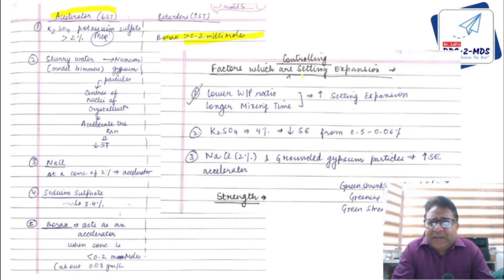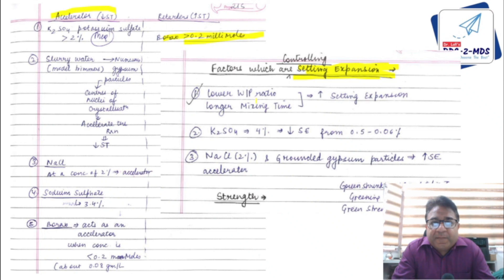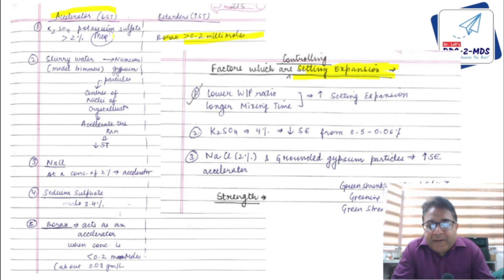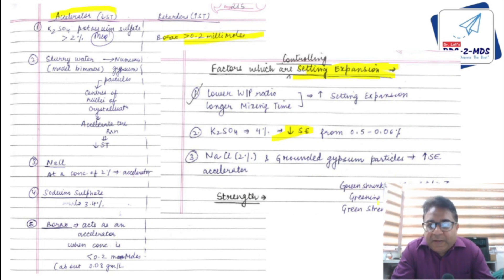Factors controlling setting expansion: lower water-powder ratio and longer mixing time increase setting expansion. Potassium sulfate at 2% is related to acceleration of the reaction, while a higher percentage affects setting expansion. Sodium chloride ground with gypsum particles increases setting expansion.